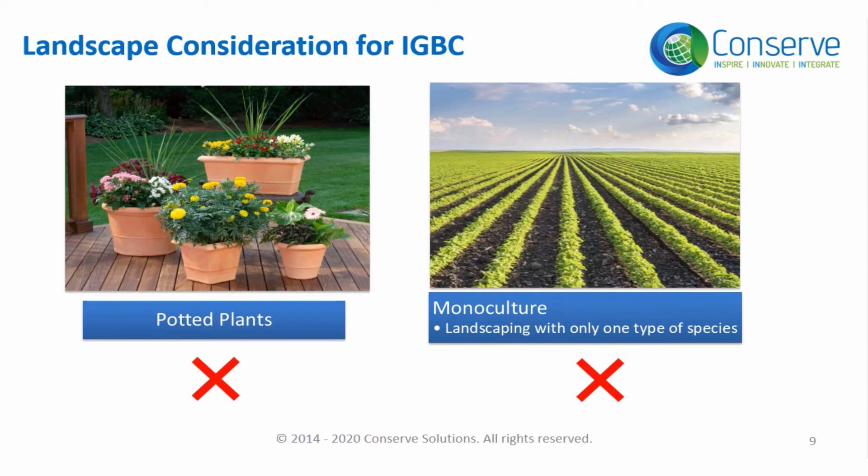Landscape with monoculture uses only one type of species — for example, a thousand coconut trees or a thousand mango trees in a farm landscape. Landscape with monoculture is not acceptable for this credit. The credit encourages biodiversity in landscape, meaning different types of species should be present.